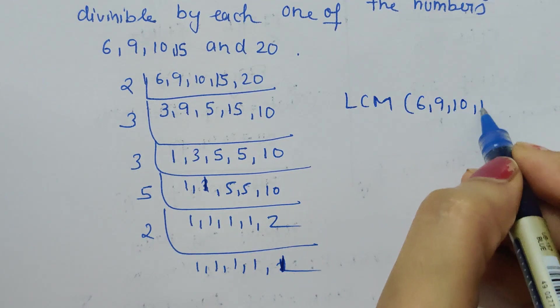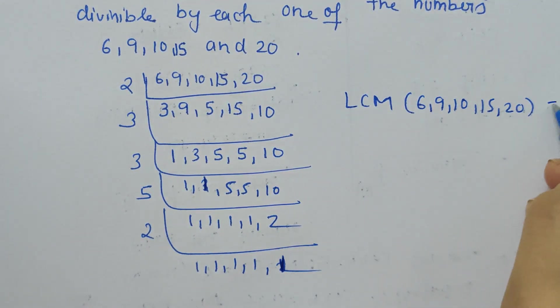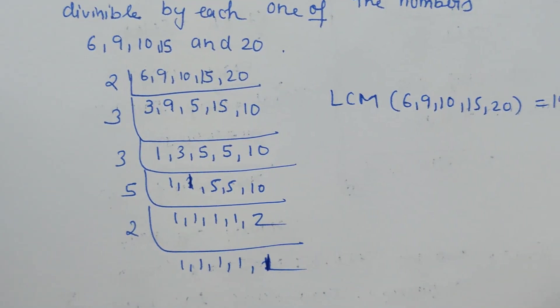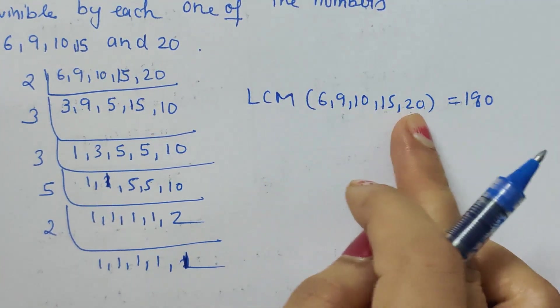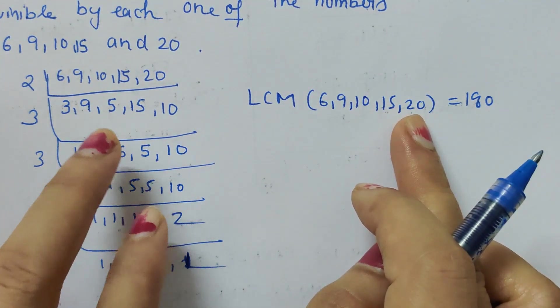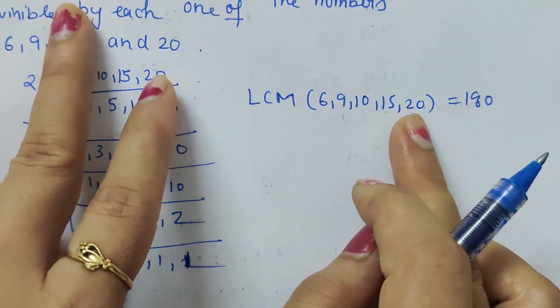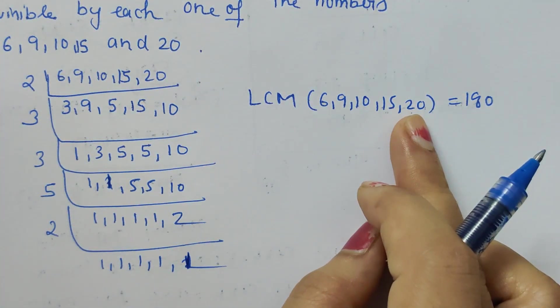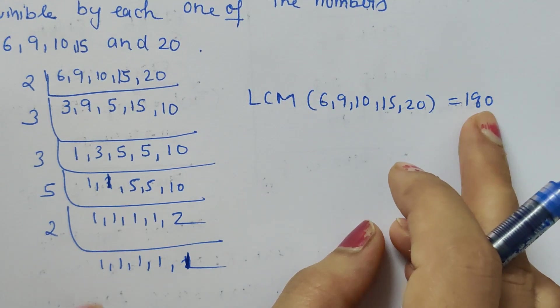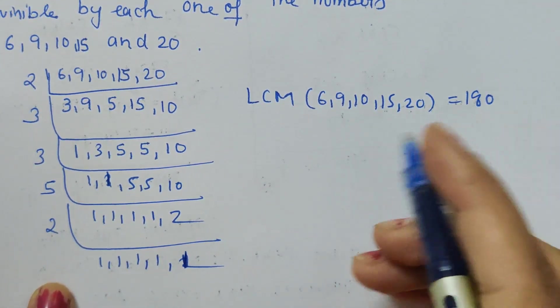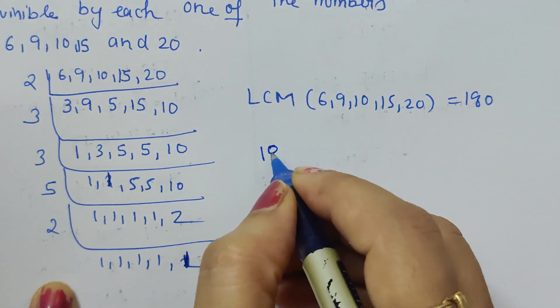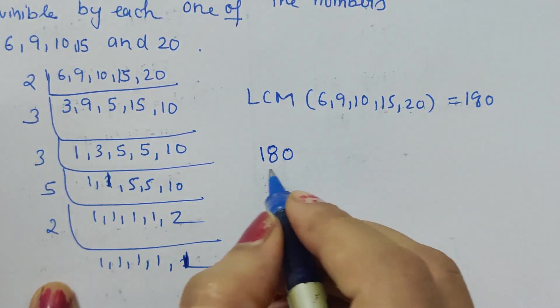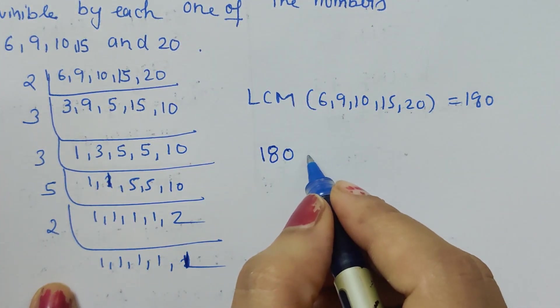So the LCM of 6, 9, 10, 15, 20 is 180. Now we have to find the least square number, so it has to be a square number. For making it a square number, what is required?